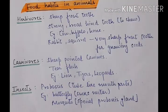Now the next topic — food habits in animals. On the basis of food habits we have herbivores and carnivores. Herbivores are animals that eat plant grass and plant products. Herbivores have sharp front teeth so that they can pull up the grass, and strong broad hind teeth to chew or crush the grass. Examples are cow, buffalo, horse. Rabbit and squirrel have very sharp front teeth for gnawing — that is, cracking or chewing nuts.